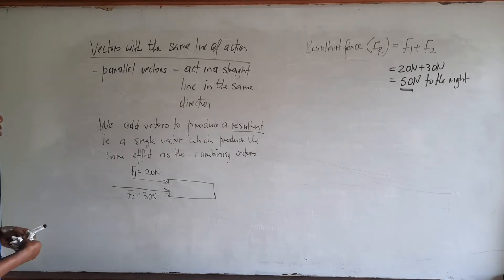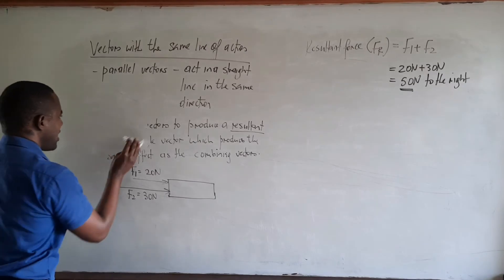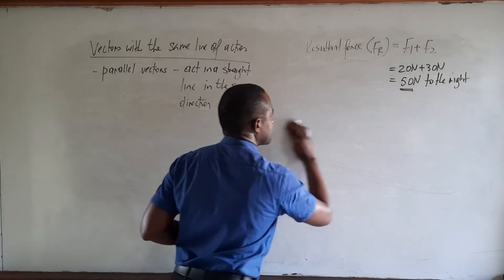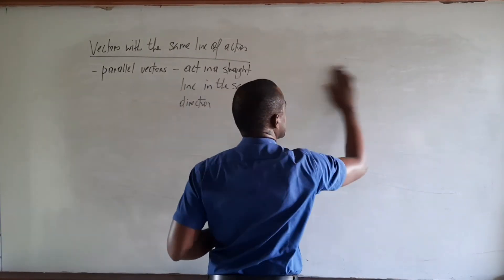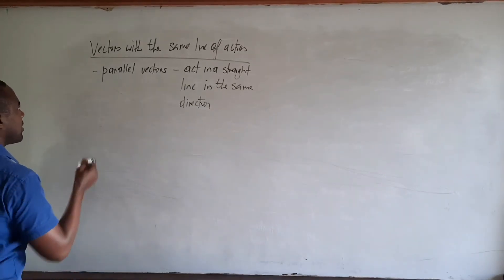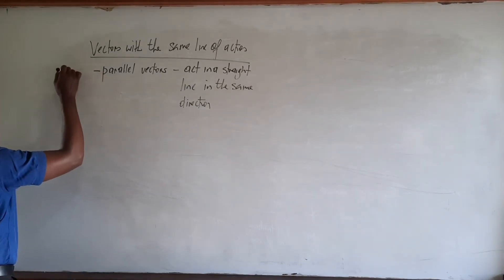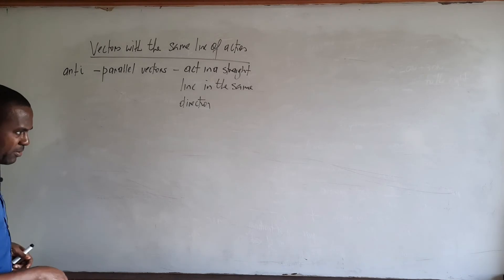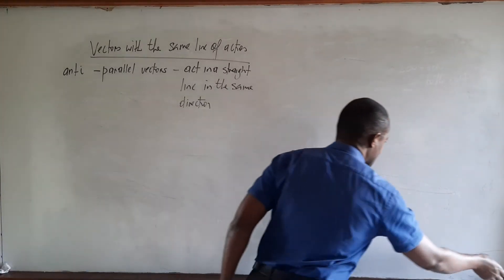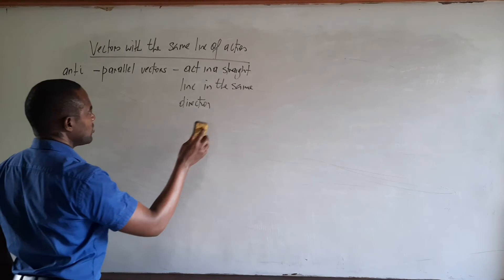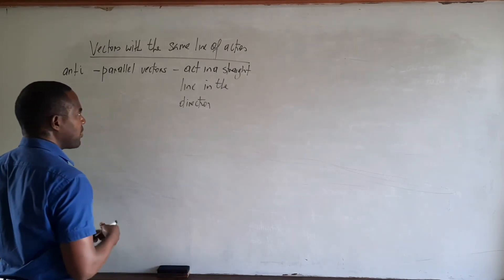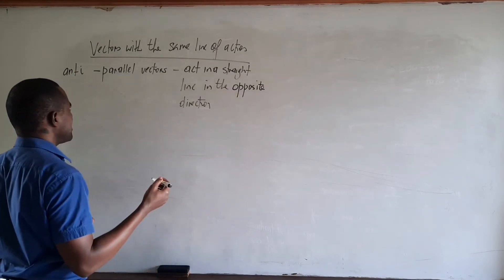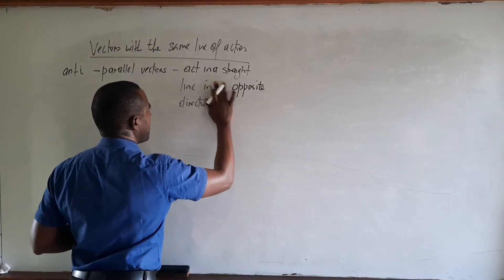Next we will look at what are called anti-parallel vectors. If parallel vectors act in a straight line in the same direction, then anti-parallel vectors also act in a straight line but in the opposite direction.